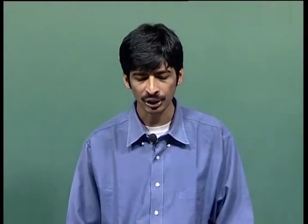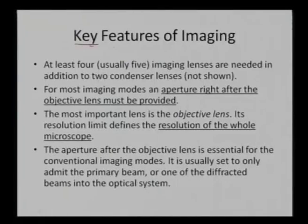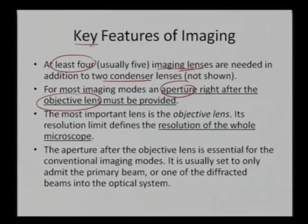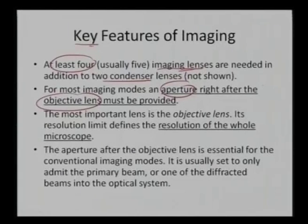There are certain key features required for imaging. We require at least three, four, or five imaging lenses in addition to two condenser lenses. For most imaging systems we keep an aperture just after the objective lens, because once we form the image plane and back focal plane we need that level to selectively choose whether to form a diffraction pattern or an image — and whether we want a bright field or a dark field image.